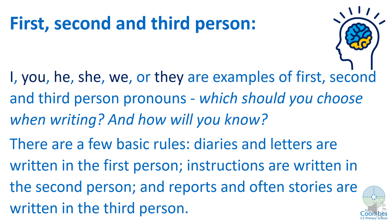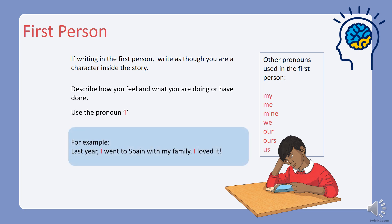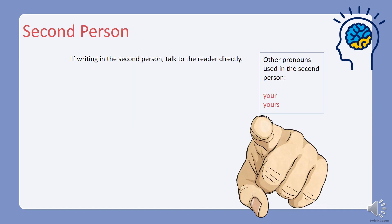First person: if you are writing in the first person, you should write as though you are a character inside the story. You should describe how you feel and what you are doing or have done. You will use the pronoun 'I' probably lots and lots. For example: 'Last year I went to Spain with my family. I loved it.' This kind of writing will probably include lots about your feelings and opinions. Other pronouns you can use in the first person are: my, me, mine, we, our, ours, and us.